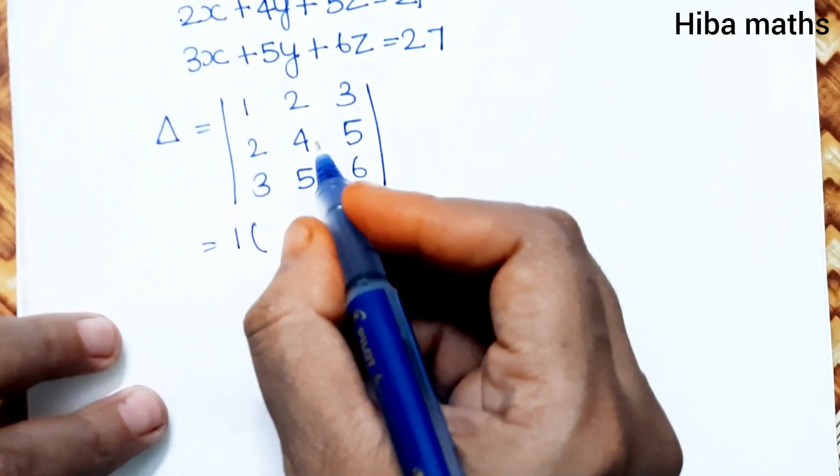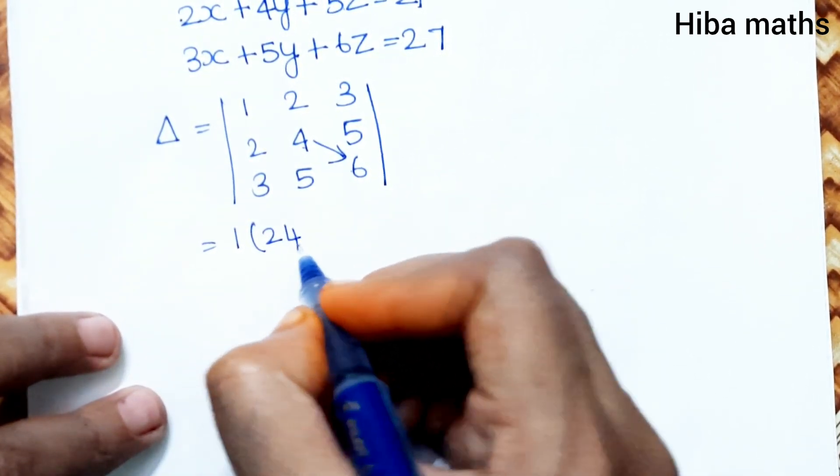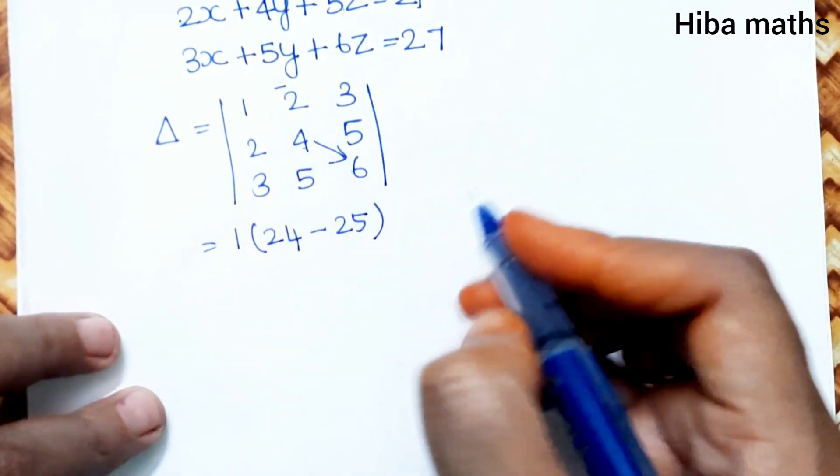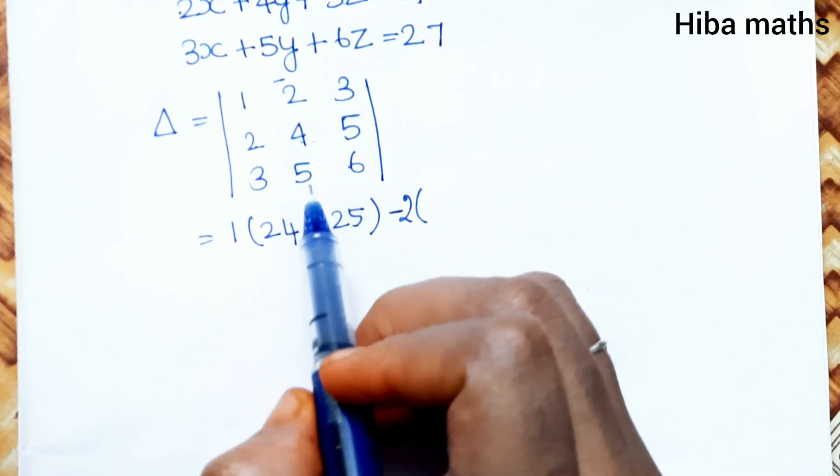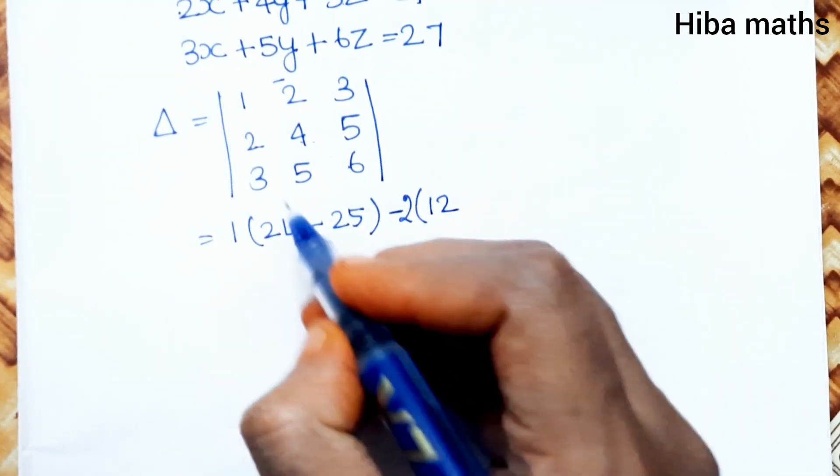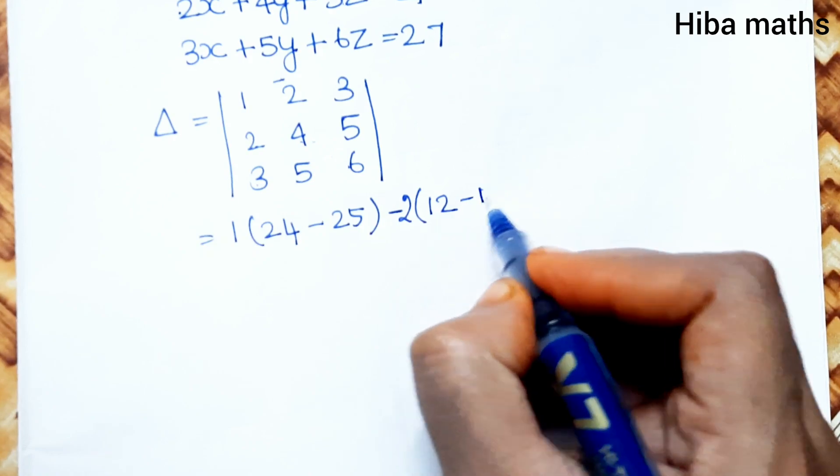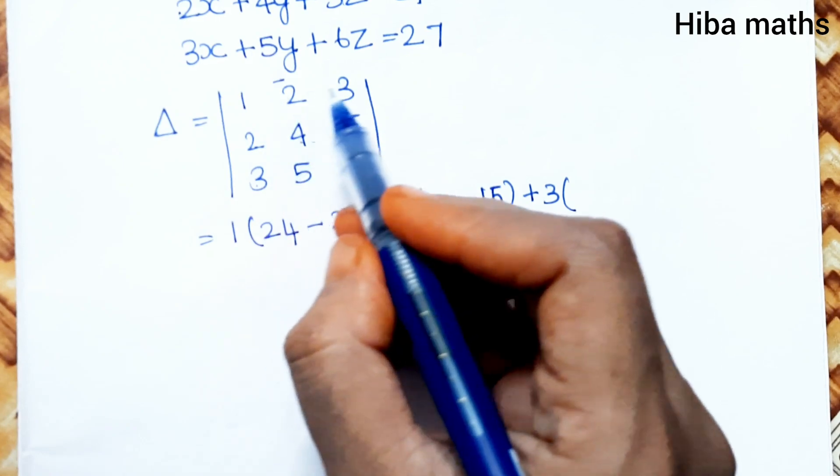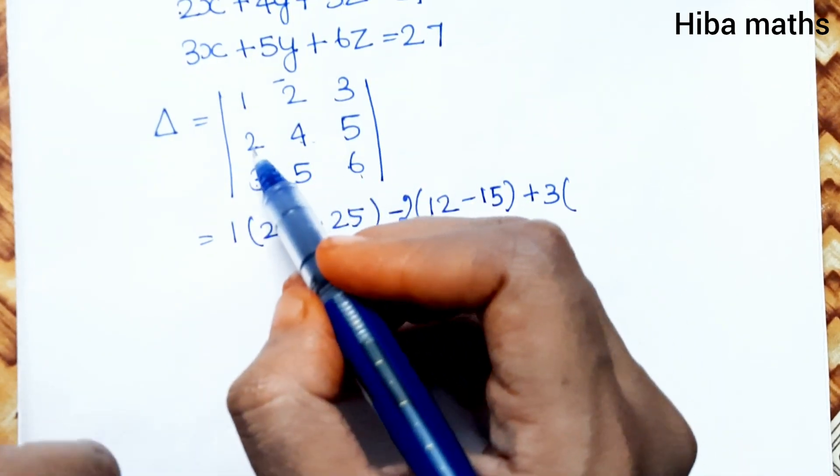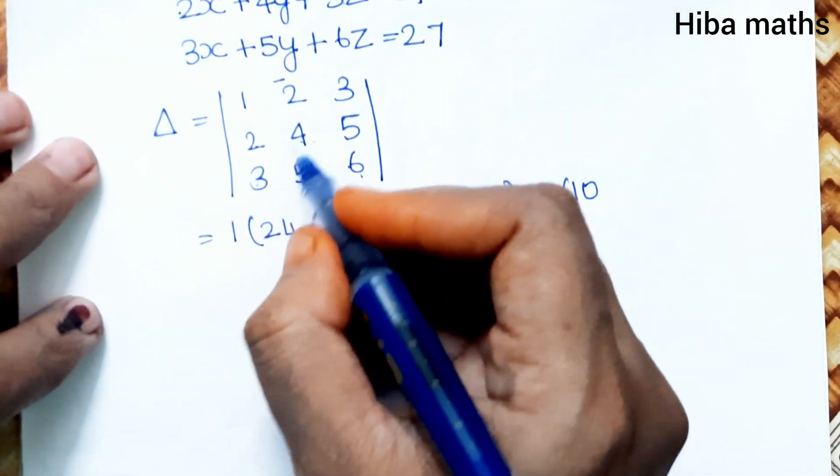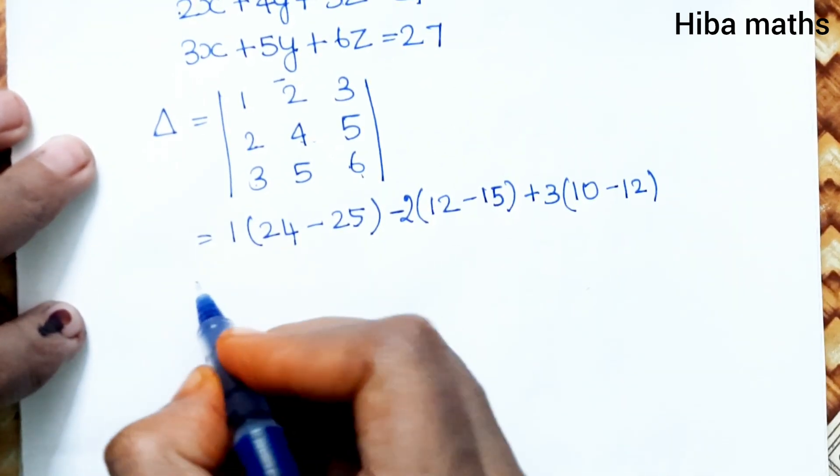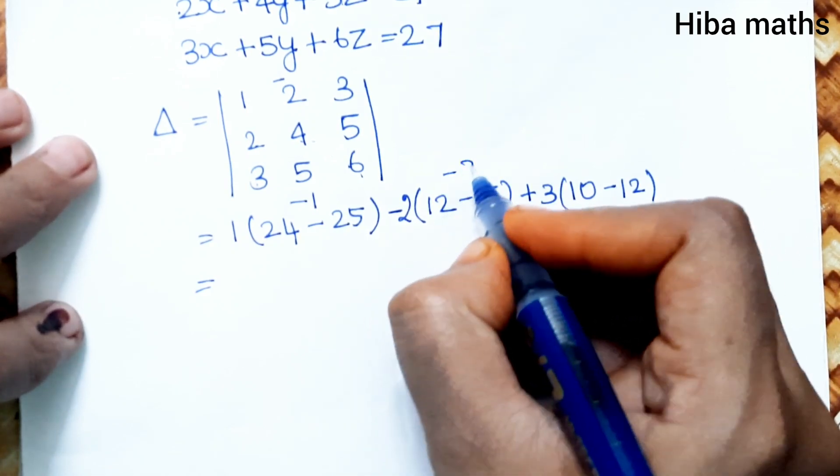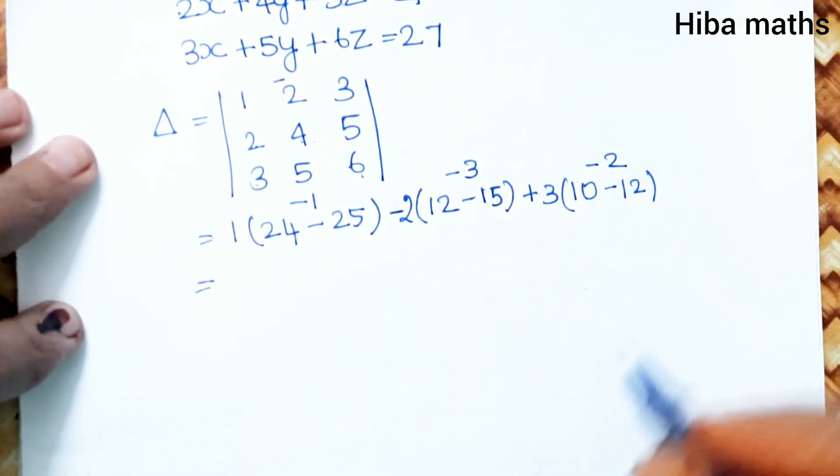First row first element: 1 into (4×6 minus 5×5), which is 24 minus 25 = -1. Minus 2 into (2×6 minus 3×5), which is 12 minus 15 = -3. Plus 3 into (2×5 minus 3×4), which is 10 minus 12 = -2.